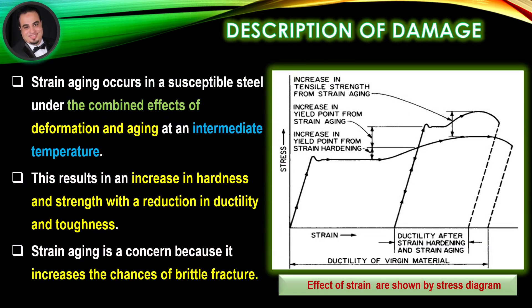Strain aging occurs in a susceptible steel under the combined effects of deformation and aging at an intermediate temperature. This results in an increase in hardness and strength, with a reduction in ductility and toughness.